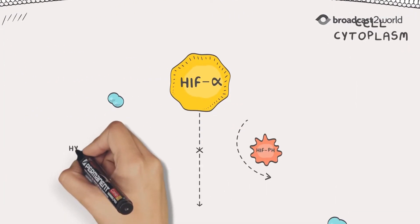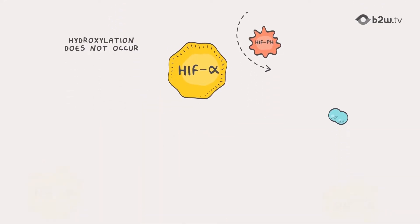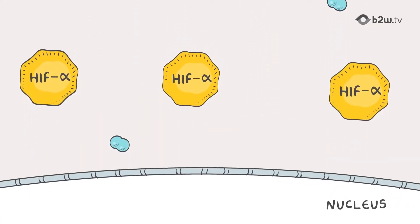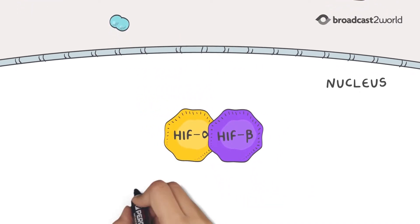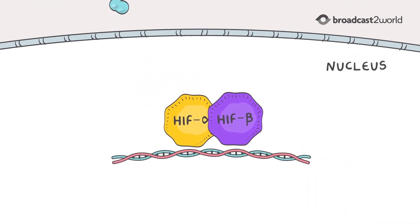In contrast, in low oxygen environments, the oxygen-dependent HIF-PH enzymes are inactive, and HIF-alpha accumulates. This allows HIF-alpha to translocate into the cell nucleus, bind to HIF-beta forming HIF, and activating the HIF pathway.